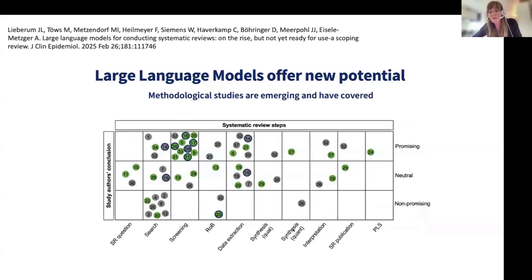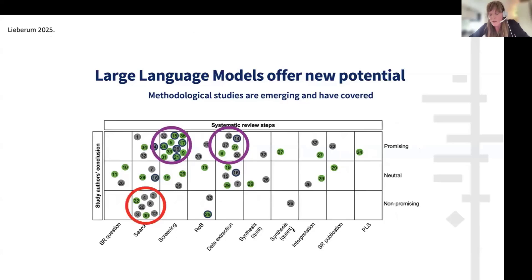A recent paper by Lieberham and colleagues provides an overview of large language model applications in systematic review conduct in health research. One of the figures shows studies evaluating different stages within the review process — green circles are validation studies, grey are other study designs — with the study authors' conclusions categorised as promising, neutral, or non-promising. When it comes to search, there is a cluster of studies deemed perhaps not yet promising, whereas the two most promising areas appear to be screening and data extraction.